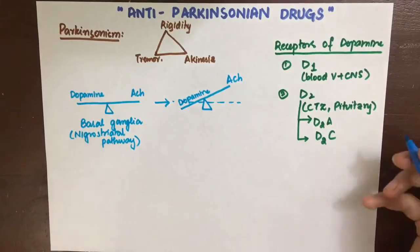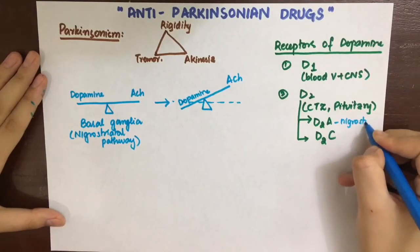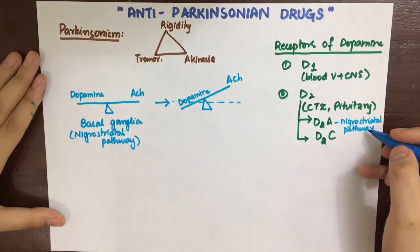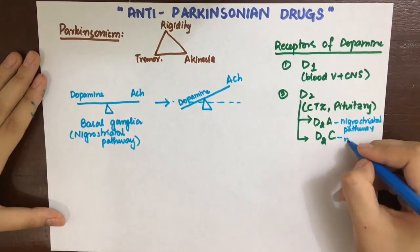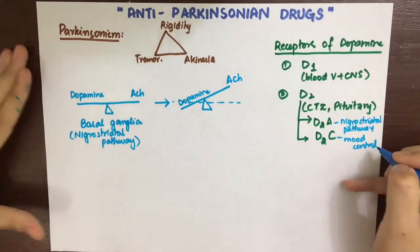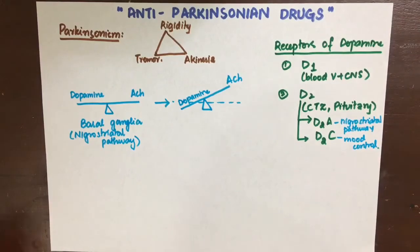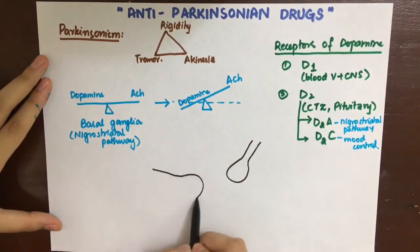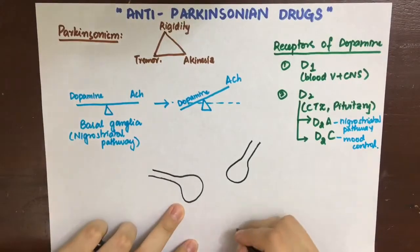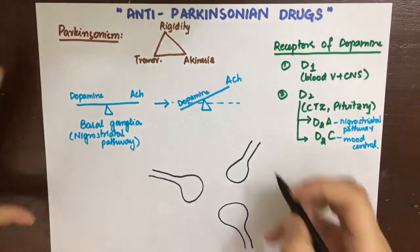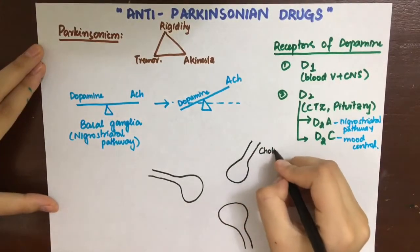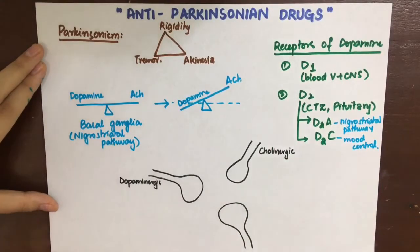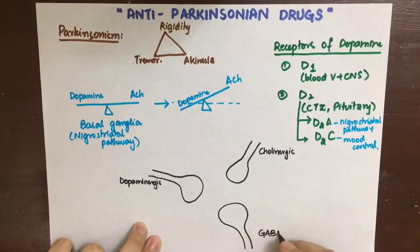There are two types of dopamine receptors: D1 and D2. D1 is Gs-coupled and D2 is Gi-coupled. D1 is present in blood vessels and the CNS, while D2 is in the chemoreceptor trigger zone and pituitary. Specifically, D2A is present in the nigrostriatal pathway, while D2C is present in the mesolimbic pathway.